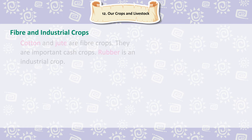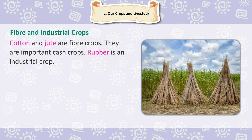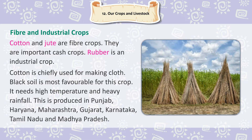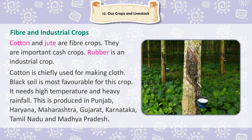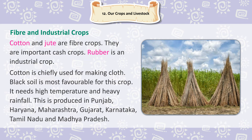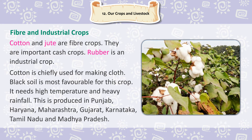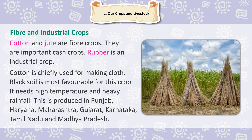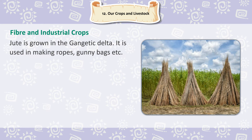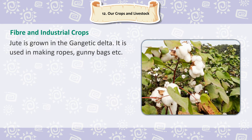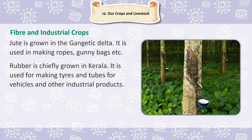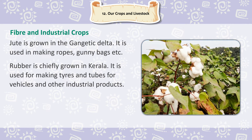Fiber and Industrial Crops. Cotton and jute are fiber crops and are important cash crops. Rubber is an industrial crop. Cotton is chiefly used for making cloth. Black soil is most favorable for cotton. It needs high temperature and heavy rainfall. Cotton is produced in Punjab, Haryana, Maharashtra, Gujarat, Karnataka, Tamil Nadu and Madhya Pradesh. Jute is grown in the Gangetic Delta and is used in making ropes, gunny bags, etc. Rubber is chiefly grown in Kerala and is used for making tires and tubes for vehicles and other industrial products.